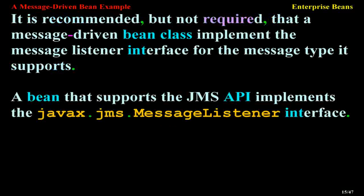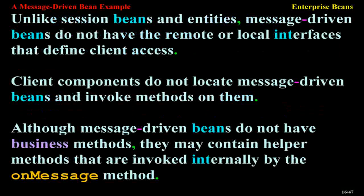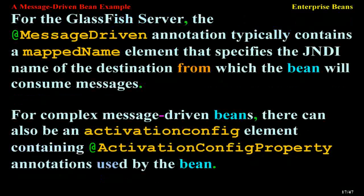A bean that supports the JMS API implements the javax.jms.MessageListener interface. Unlike session beans and entities, message-driven beans do not have remote or local interfaces that define client access. Client components do not locate message-driven beans and invoke methods on them. Although message-driven beans do not have business methods, they may contain helper methods that are invoked internally by the onMessage method. For the GlassFish server, the @MessageDriven annotation typically contains a mappedName element specifying the JNDI name of the destination from which the bean will consume messages, and can also contain a messageListenerInterface element with activationConfig property annotations.